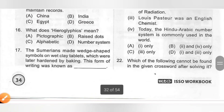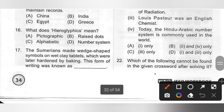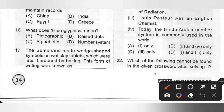Sixteenth: What does hieroglyphics mean? Options: A. Pictographic, B. Raised dot, C. Alphabetic, D. Number system. Hieroglyphics was developed by Egyptians and was based on pictures which conveyed various messages. So hieroglyphics means pictographic. Option A is the correct answer.